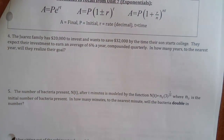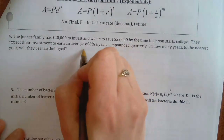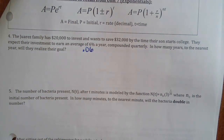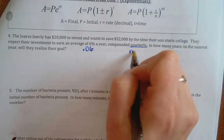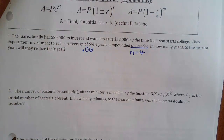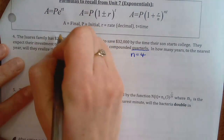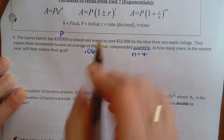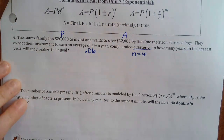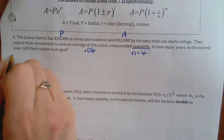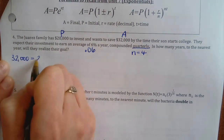The Juarez family has $20,000 to invest and wants to save $32,000 by the time their son starts college. They expect their investment to earn an average of 6% per year compounded quarterly — that's four times a year. In how many years to the nearest year will they reach their goal? I saw 'compounded quarterly,' so I'll use the compound interest formula.